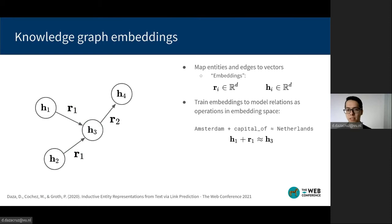For example, assume that we have an embedding for the city of Amsterdam. We can optimize it so that when adding the embedding for the relation capital of to it, the result is close to the embedding of the Netherlands.